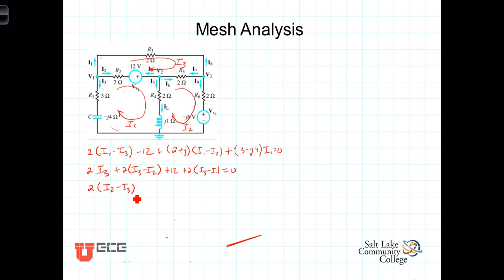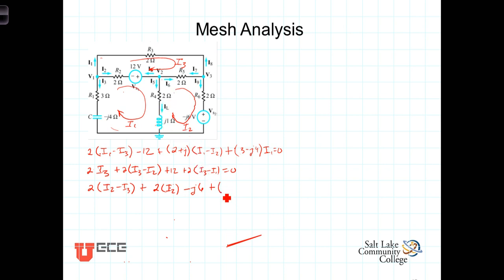For the right-hand loop, starting and going in the clockwise direction, we've got 2 times I2 minus I3. Coming down the right-hand side we have a negative voltage drop, so minus j6. Coming back up we've got plus the impedance in that branch, which is 2 plus j, times I2 minus I1. The sum of those terms equals 0.